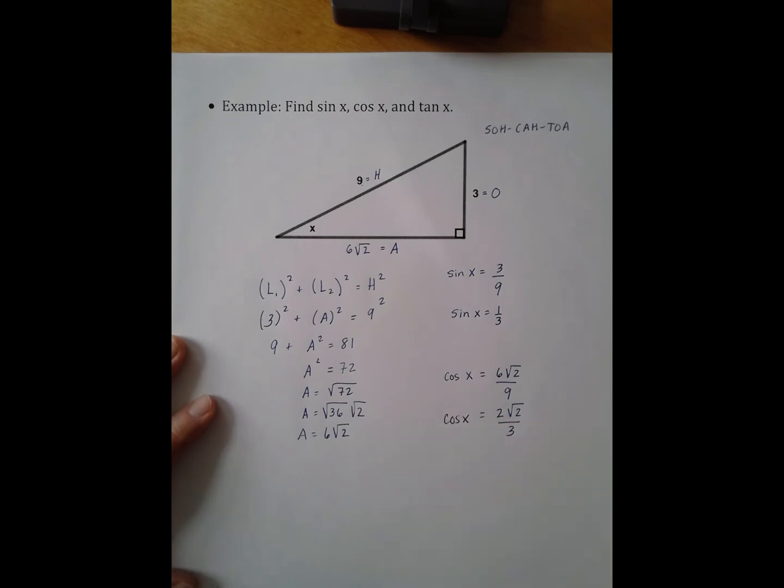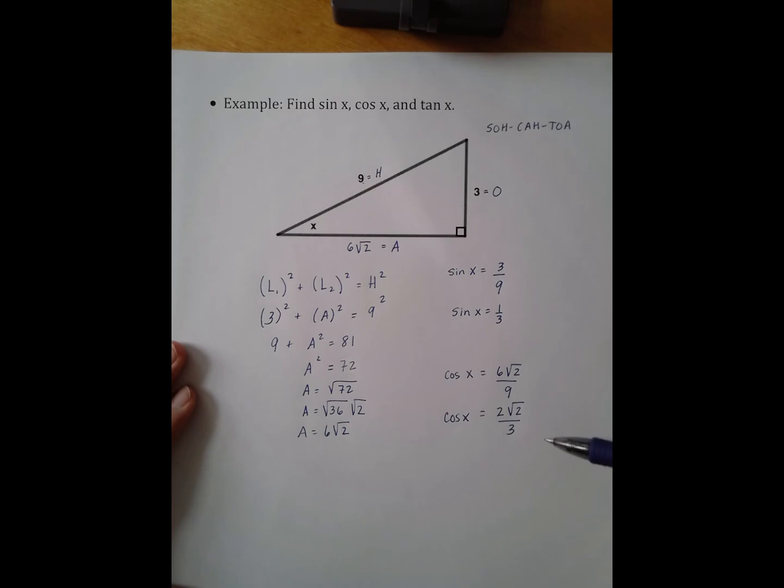So I have now found two out of my three trig ratios. The third trig ratio that I'm going to find is tan of X. Tan of X is TOA, so opposite over adjacent. So 3 over 6 root 2. I can simplify that to be 1 over 2 root 2.